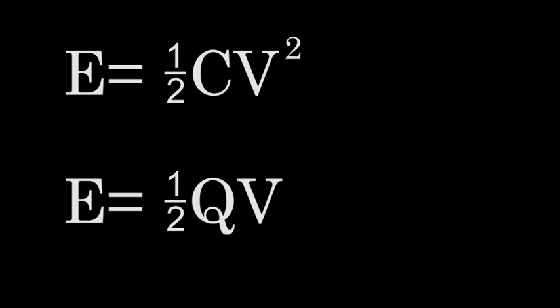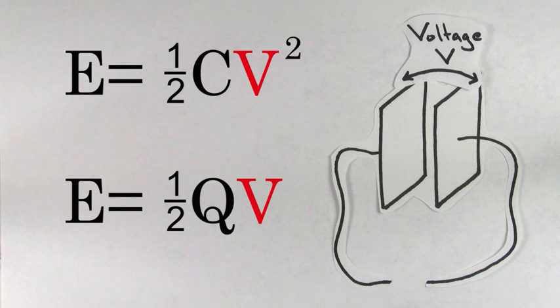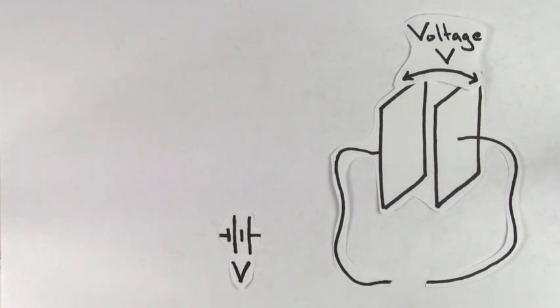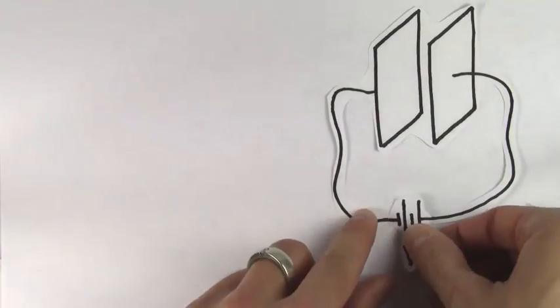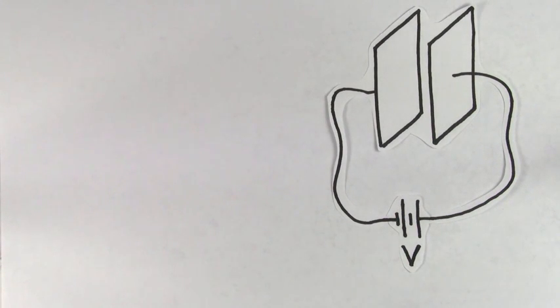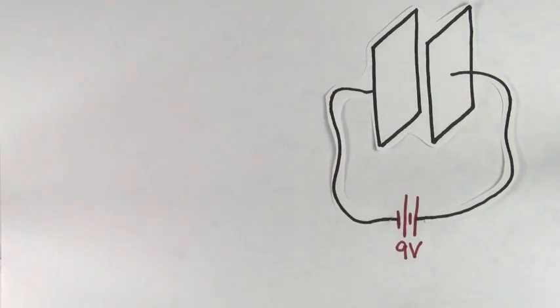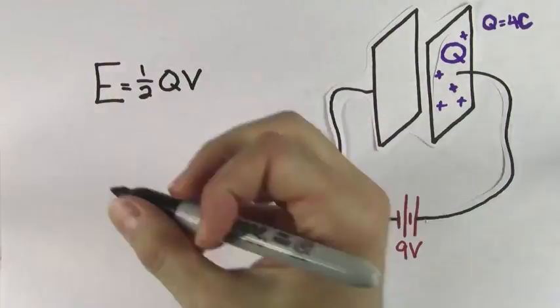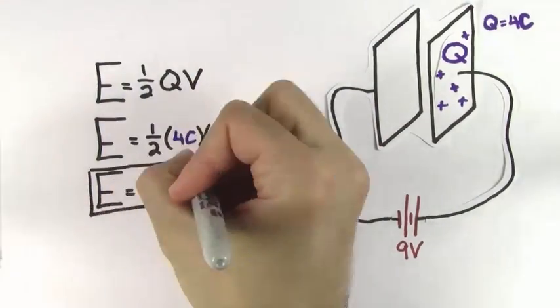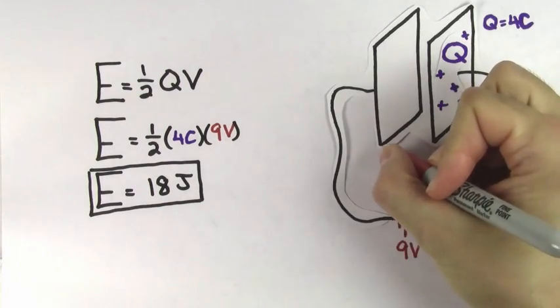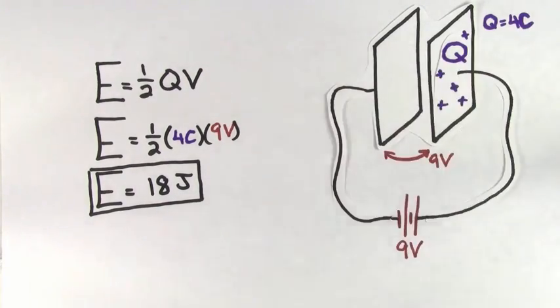But you have to be careful, the voltage V in these formulas refers to the voltage across the capacitor. It's not necessarily the voltage of the battery in the problem. If you're just looking at the simplest case of one battery that has fully charged up a single capacitor, then in that case, the voltage across the capacitor will be the same as the voltage of the battery. So if a 9 volt battery has charged up a capacitor to a maximum charge of 4 coulombs, then the energy stored by the capacitor is going to be 18 joules, because the voltage across the capacitor is going to be the same as the voltage of the battery.